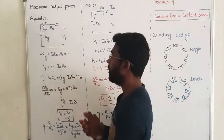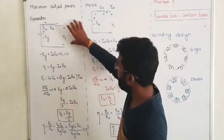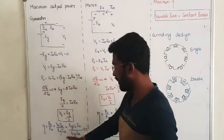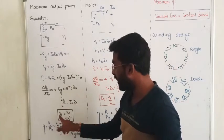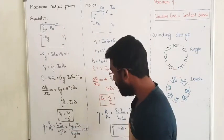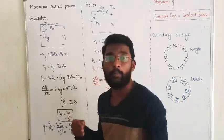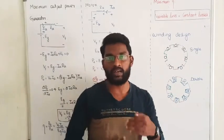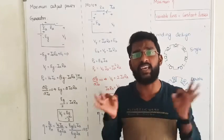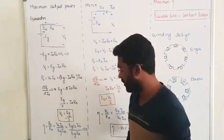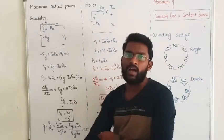Next, what will be the efficiency of the generator at maximum power output? Efficiency equals output power divided by input power. Output power is Vt into Ia, and input power is Eg into Ia. Under the maximum power transfer condition, Vt can be replaced by Eg/2. So efficiency becomes 0.5, or 50%. The conclusion is: when we try to deliver the maximum power, the efficiency of the DC machine is greatly reduced to 50%.